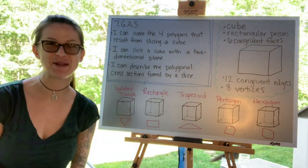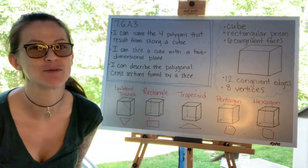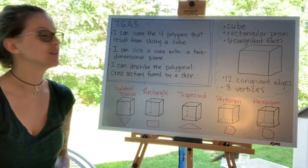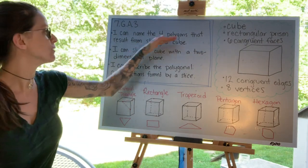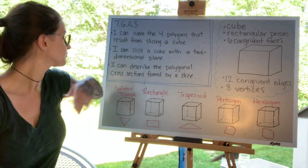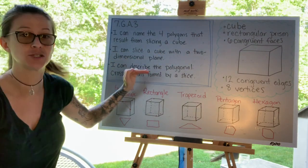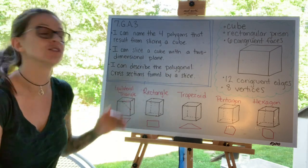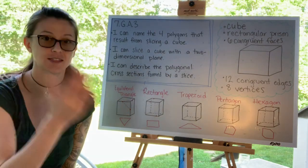Hi, it's Sam from Muddy Math, where we clear up the muddy moments in middle school math. Today we want to be able to name the four polygons that result from slicing a cube, slice a cube with a two-dimensional plane, and describe the polygonal cross sections by a slice.